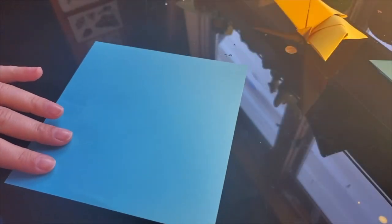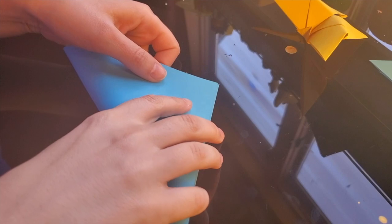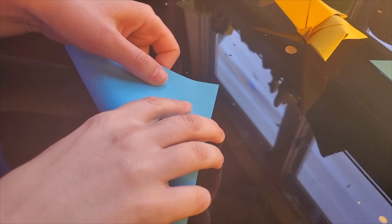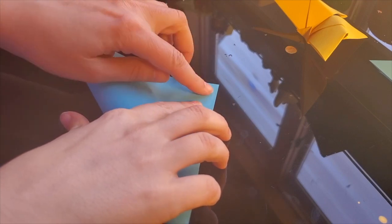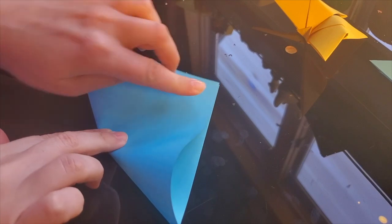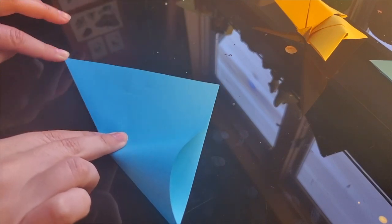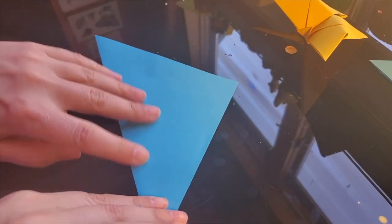We'll start by making the butterflies. You will need 10 to 12 for this project. Take one square of origami paper and fold corner to corner. Crease and unfold. Rotate the paper and repeat these steps. Use your thumbnail to get a strong crease.